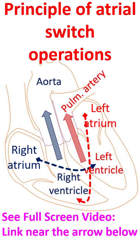While the arterial switch redirects the arteries arising from the ventricles, the atrial switch reroutes the blood coming to the atria. In atrial switch, blood returning to the right atrium is redirected to the left ventricle. Similarly, blood returning from the lungs to the left atrium after oxygenation is redirected to the right ventricle. So, though the position of the arteries is not corrected, the type of blood which they receive is that which they should have received normally. Hence, it is a functional correction of transposition of great arteries.